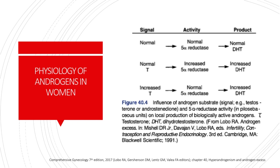This diagram shows the influence of androgen substrate and 5-alpha-reductase activity on the local production of biologically active androgens. If we have normal testosterone levels coupled with normal 5-alpha-reductase, then we have normal DHT levels. If we have normal testosterone levels but increased 5-alpha-reductase activity, then we have increased levels of DHT, which will also produce hirsutism. If we have increased levels of testosterone even with normal 5-alpha-reductase, that will also lead to increased DHT activity, leading again to hirsutism or hyperandrogenic signs.